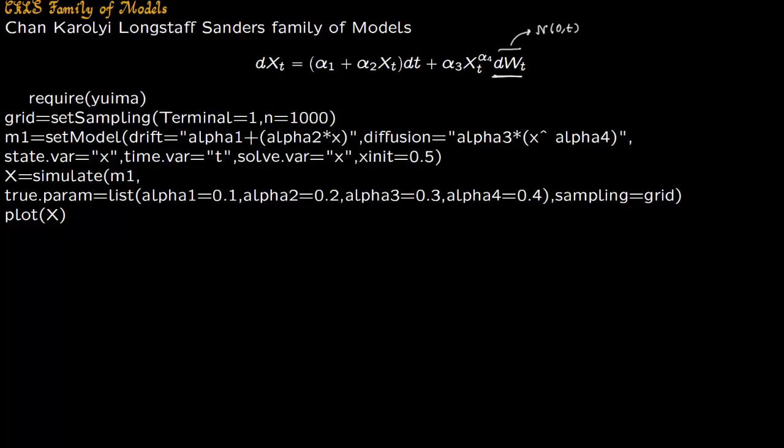So you have four parameters here which you are feeding in: alpha one, alpha two, alpha three, and then alpha four, and you're solving for Xt.